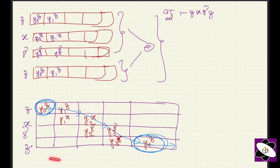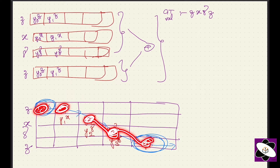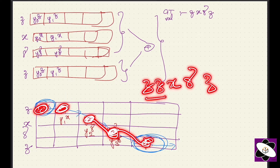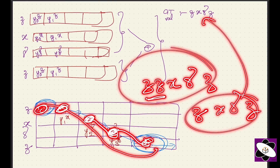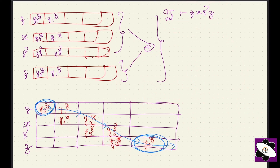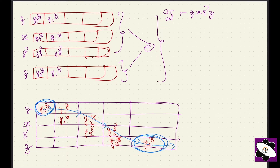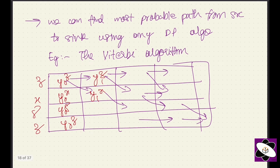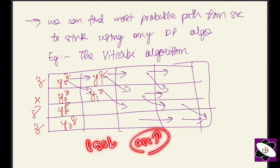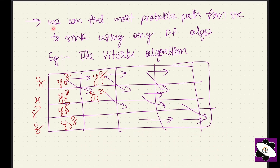Whatever alignment path we choose in training — for example z, z, x, gamma, z — after deduplication we get z, x, gamma, z, which matches the given text. We need to find the path with the highest probability (path cost). Loss should be minimum, accuracy should be high, and max probability should be high.